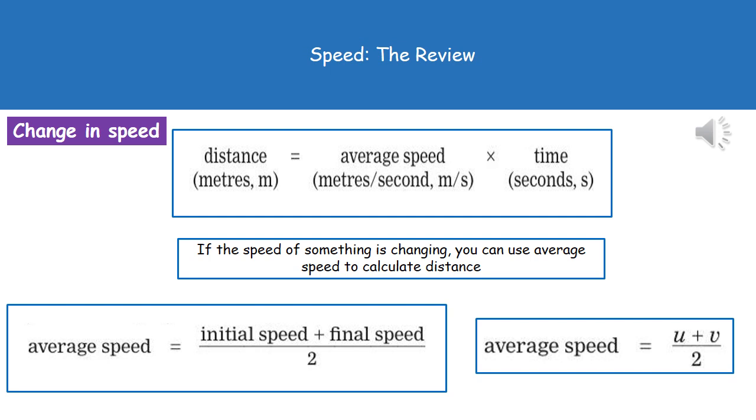At the top what we've got there is just the rearranged equation. Again, you will find that on page two of your exam booklet. Distance equals your average speed times by the time, so you don't even have to rearrange it for that one.